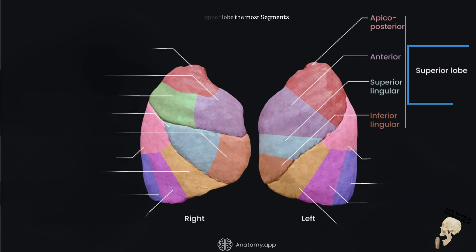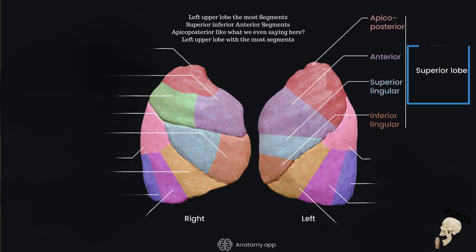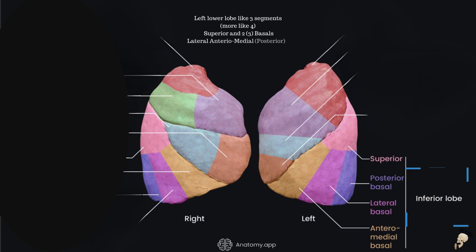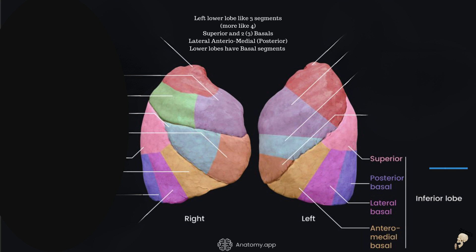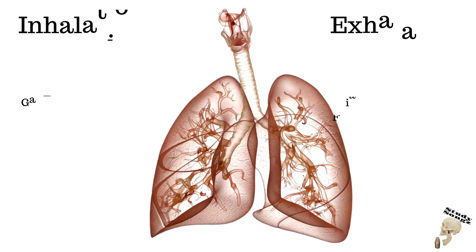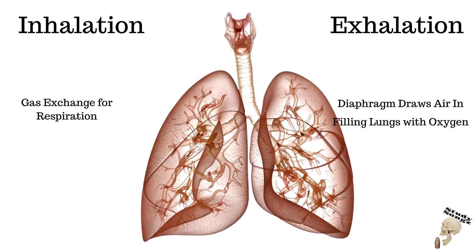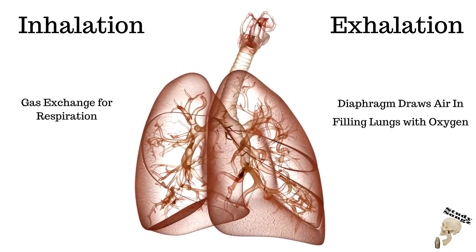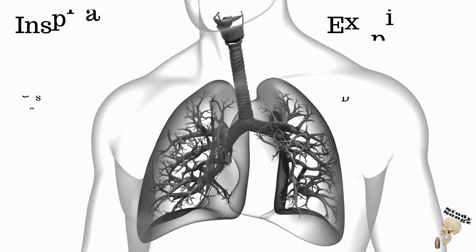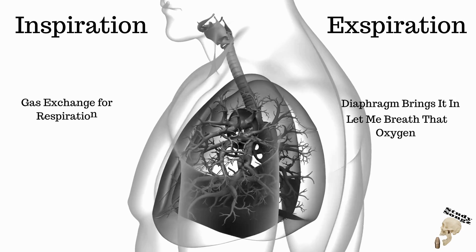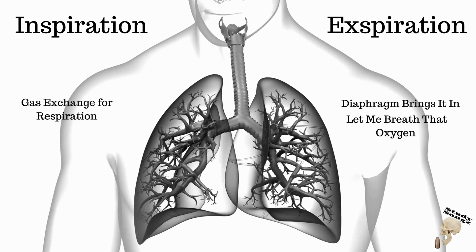Left upper lobe has the most segments: superior, inferior, anterior, apical, and posterior. Left lower lobe: three segments — superior and two basals, lateral with superior, lateral, anterior, and medial. Lower lobes have basal segments. Inhalation, exhalation, gas exchange for respiration. Diaphragm brings it in, let me breathe that oxygen.